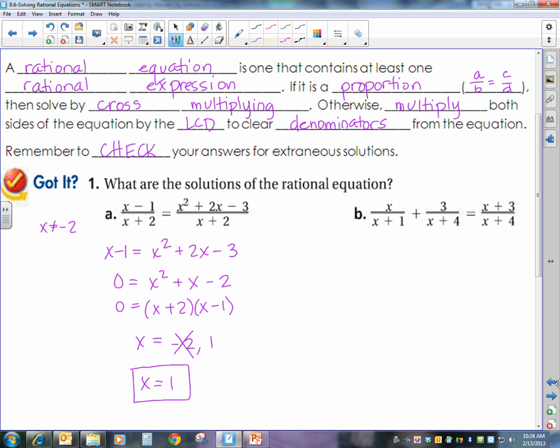Okay, now look at the next example. We have not a proportion, so I'm going to find out what the LCD is. The LCM, this is x plus 1, x plus 4, x plus 4, so my LCD is going to be x plus 1 times x plus 4.